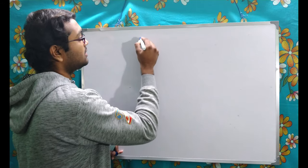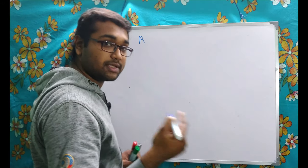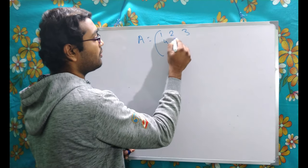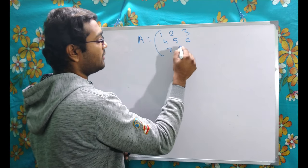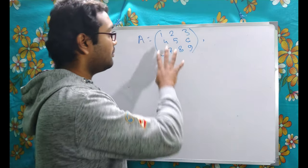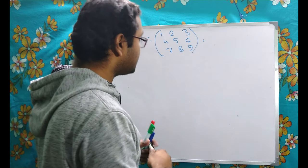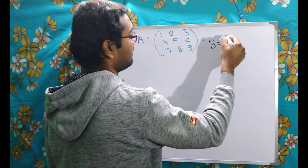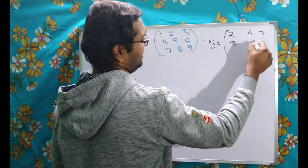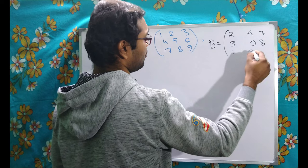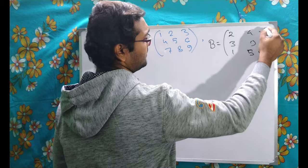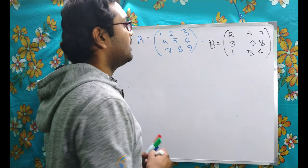Let us take two 3×3 matrices. Let matrix A be: 1, 2, 3, 4, 5, 6, 7, 8, 9. I am writing matrix A in blue color. And the second matrix B in black color: 2, 4, 7, 3, 9, 8, 1, 5, 6. These are our two matrices.